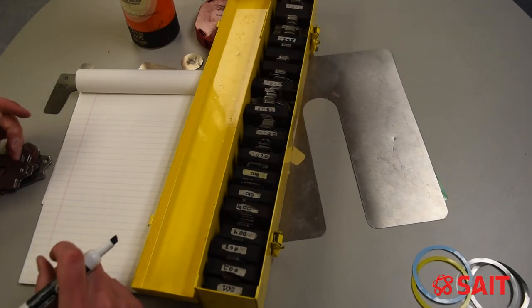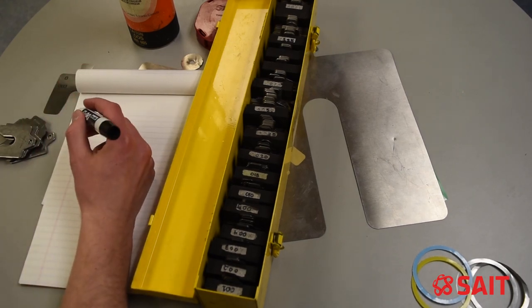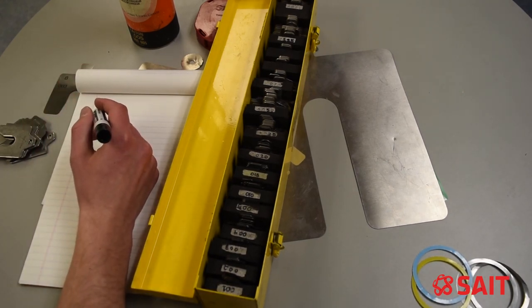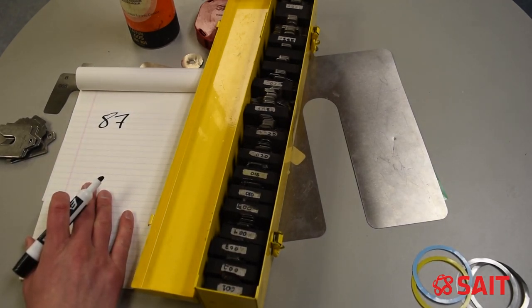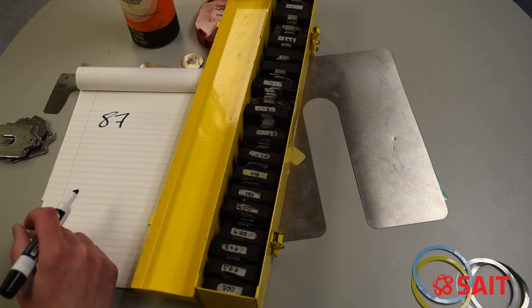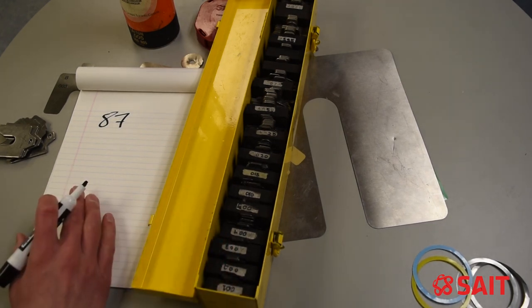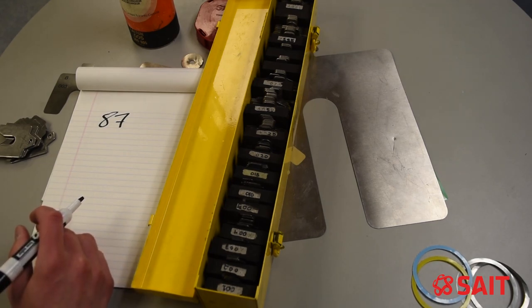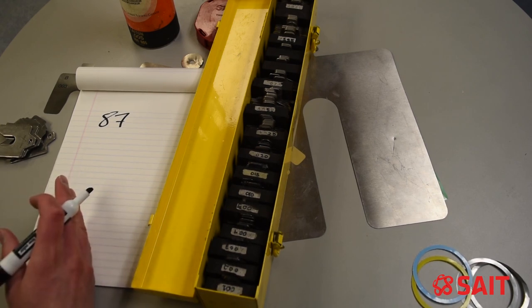So I am going to be a little sacrilegious here and write on some paper with a whiteboard eraser marker. Let's pretend for a minute we needed 87 thousandths of an inch. There is no such thing as an 87 thousandths shim. So I would need to find a combination of these shims from this kit here to make 87 thousandths of an inch.